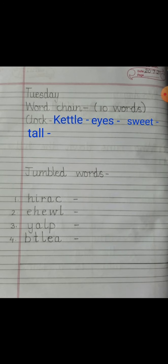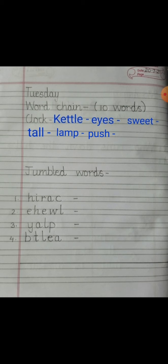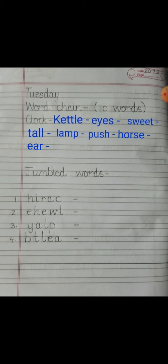The next word is 'tall', as it starts with T. The word tall ends with the letter L, so write the next word 'lamp'. Lamp ends with the letter P, so write the next word 'push'. This word ends with the letter H.